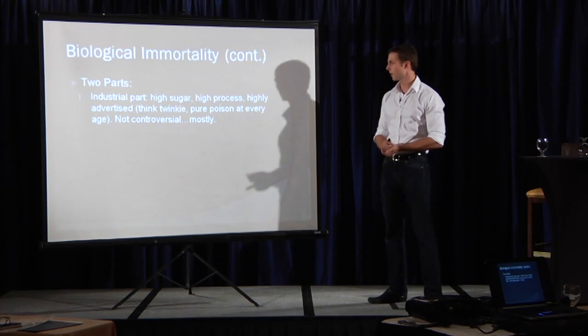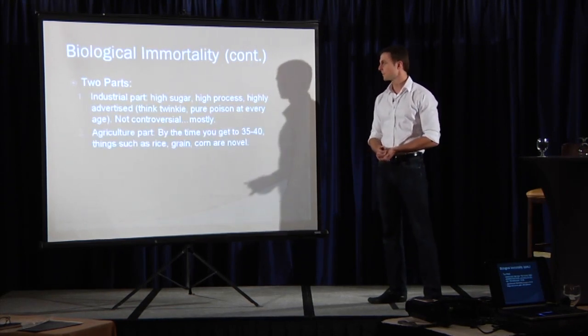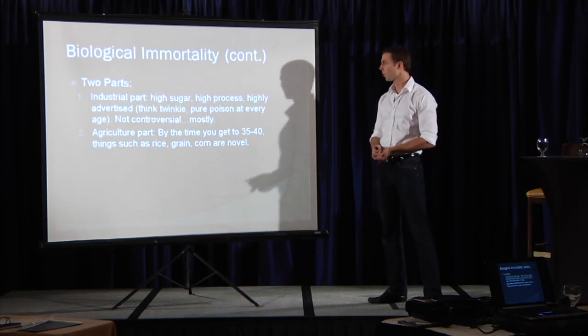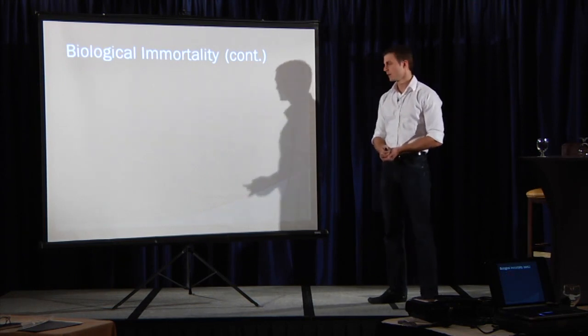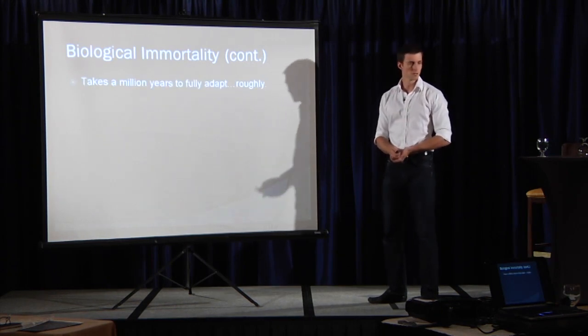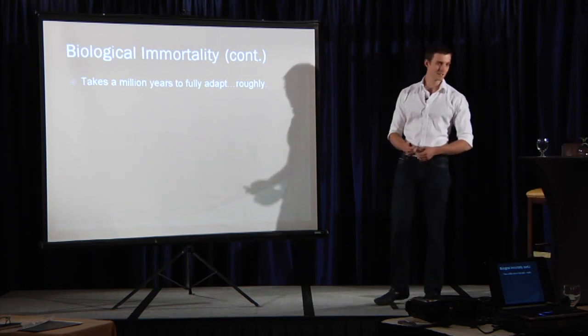The problem is the industrial part: high sugar, high processed, highly advertised, Twinkies. Problem is agriculture, 35 to 40. Rice, grain, corn, they're very, very novel because it takes about a million years to adapt fully. So in a million years, we will be agriculturally adapted. None of us in this room are going to get there, but we might as a human race be there.